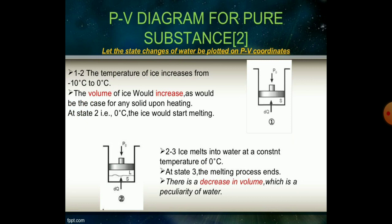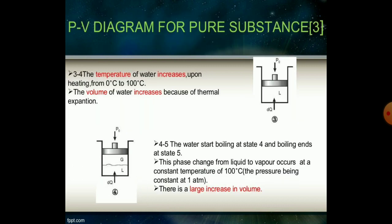At stage 2, at 0°C, the ice starts melting and begins converting into liquid water. From point 2 to 3, ice melts into water at the constant temperature of 0°C. At stage 3, the melting process ends. There is a decrease in volume at this point, which is a particular property of water.